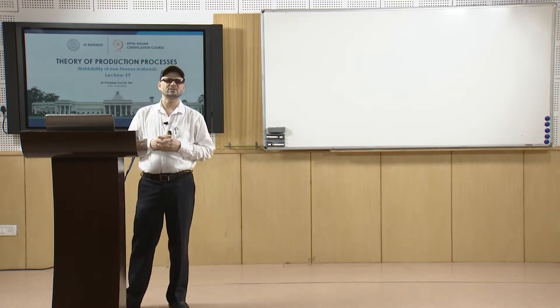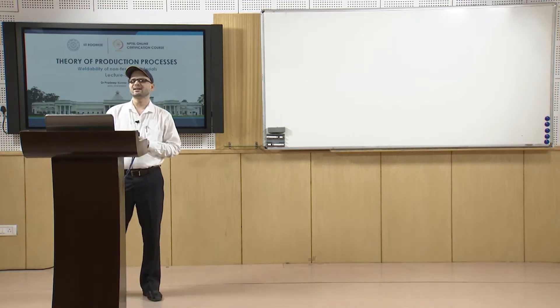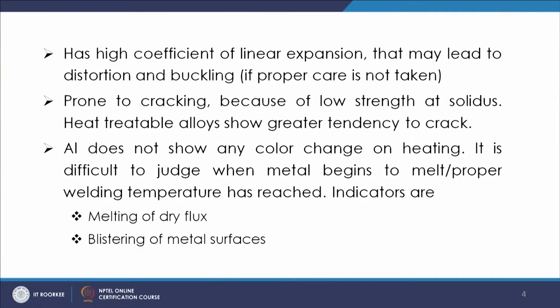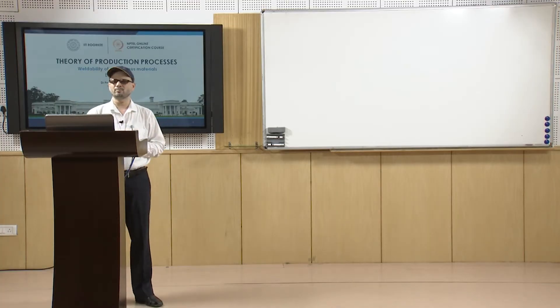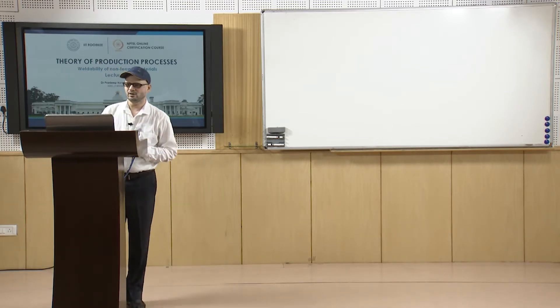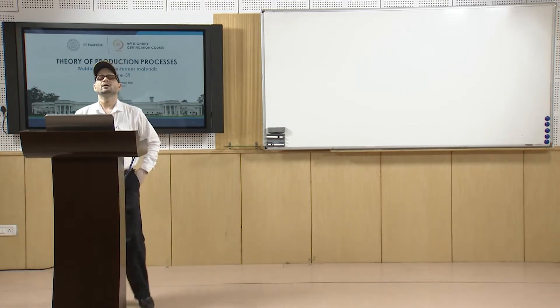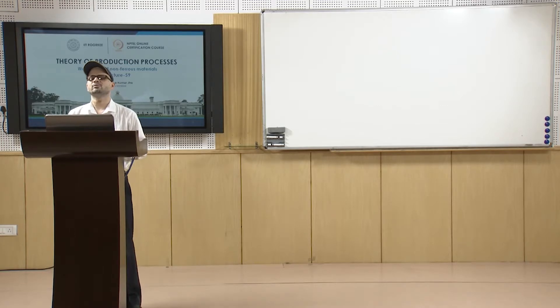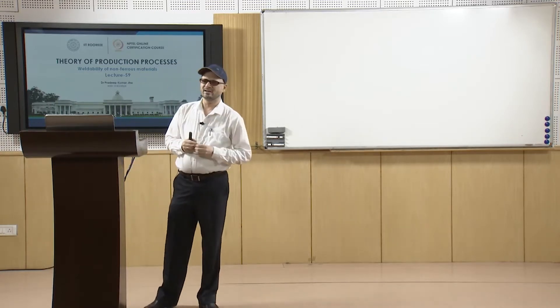Another challenge with aluminum is its very high coefficient of linear expansion, which increases the chances of distortion and buckling as temperature rises. Aluminum is also prone to cracking because of its low strength at the solidus, especially heat-treatable alloys. Aluminum makes alloys with a large variety of materials; some are heat-treatable and some are not.